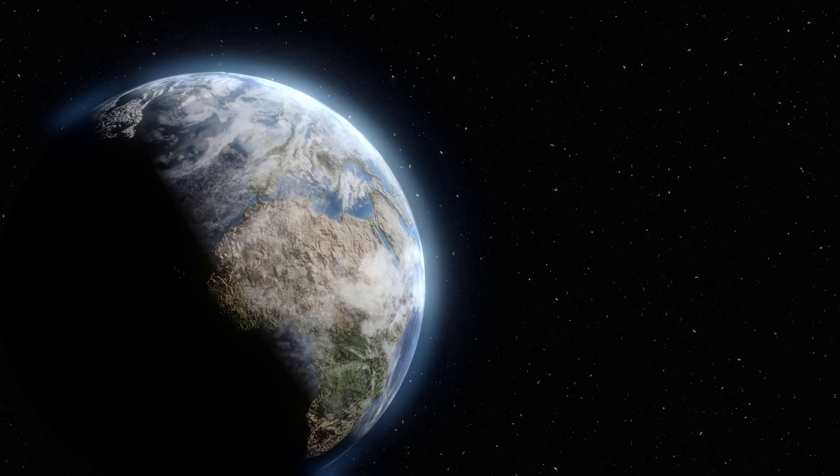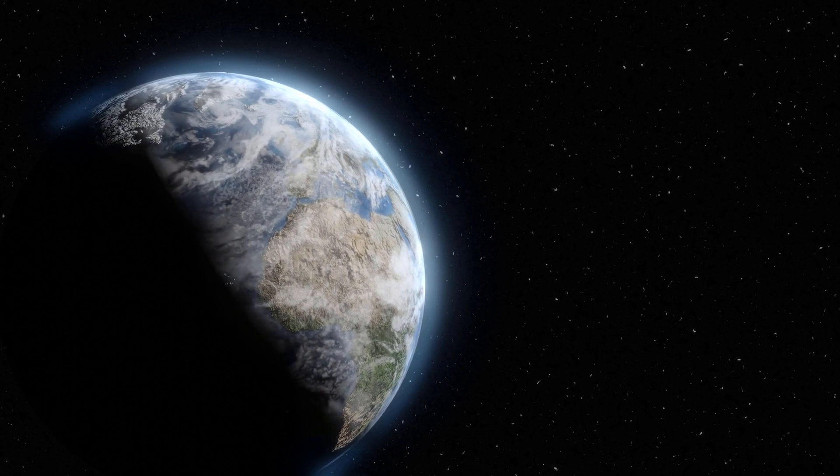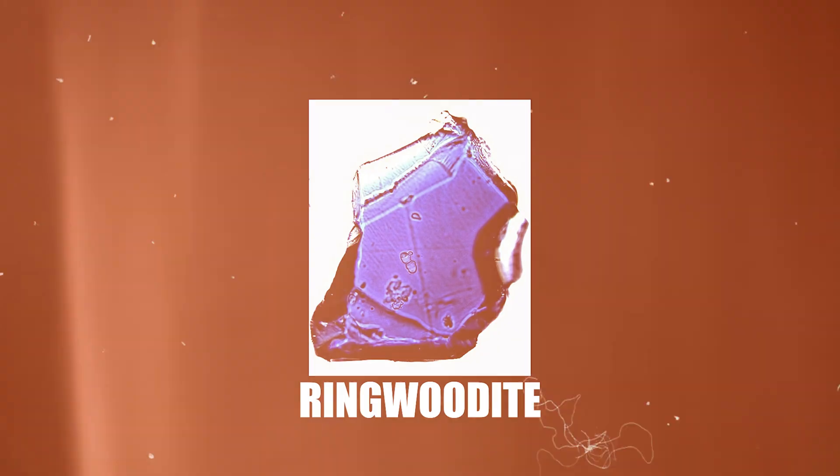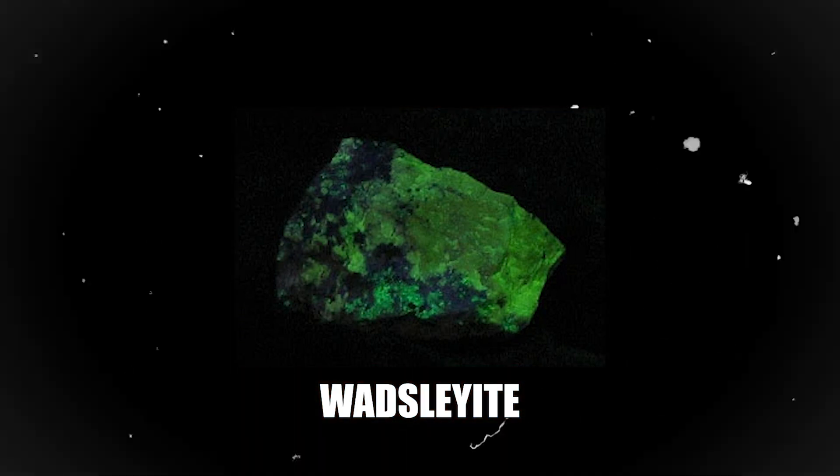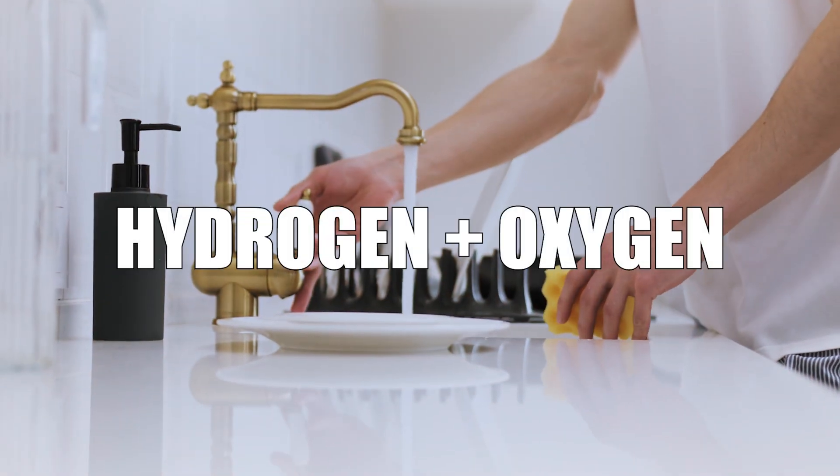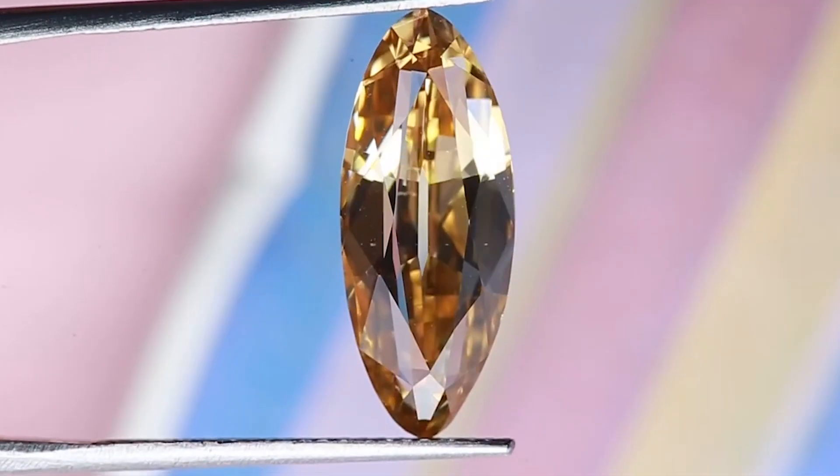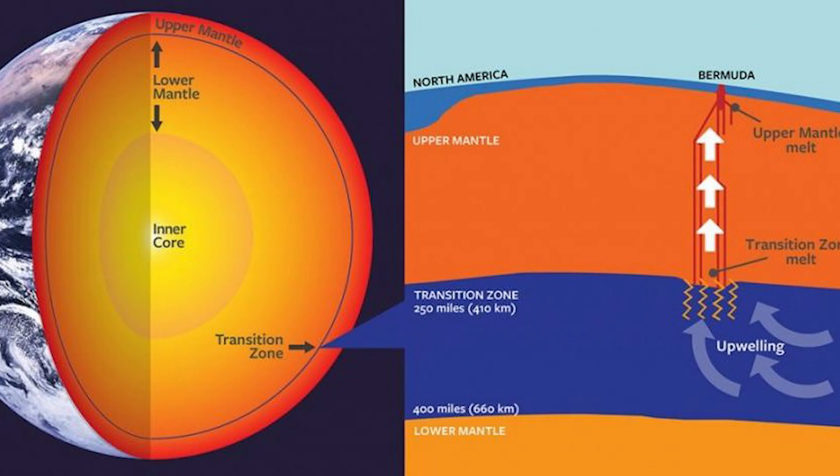Another theory says that most of the water on Earth was already inside the planet and slowly made its way to the surface. Ringwoodite and Wadsleyite are hydrous materials in the Earth's mantle that contain the elements needed to make water, hydrogen and oxygen. Ringwoodite is hidden inside diamonds in the transition zone, which is a layer of the Earth between the upper and lower mantles.